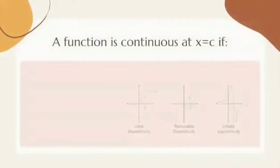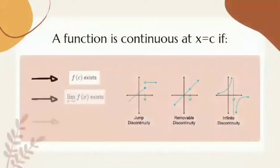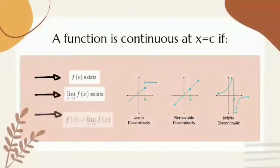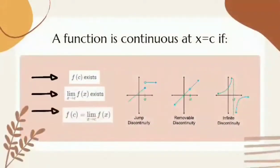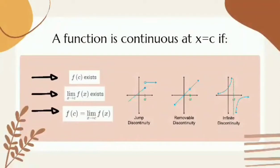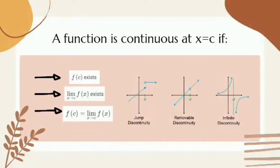How do we know if a function is continuous at x equals c? A function is continuous at x equals c if f of c exists, the limit of f of x as x approaches c exists, and f of c equals the limit of f of x as x approaches c.